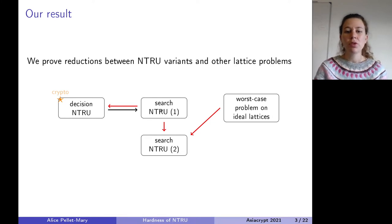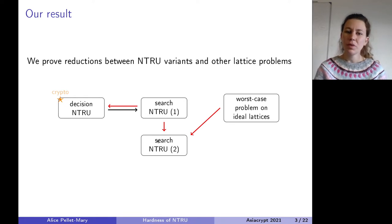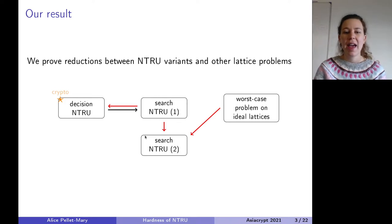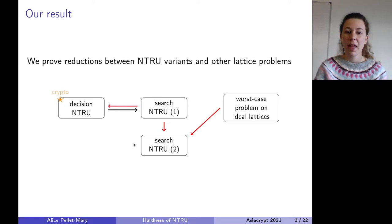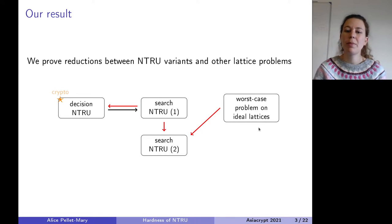We introduce two search variants of NTRU. There are two quite natural ways of defining the search variant. We have one search variant which we can prove is equivalent to the decisional variant of NTRU. And we have a second search variant which we can prove is at least as hard as some worst-case problem on ideal lattices.